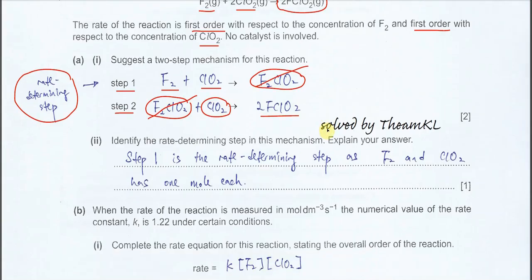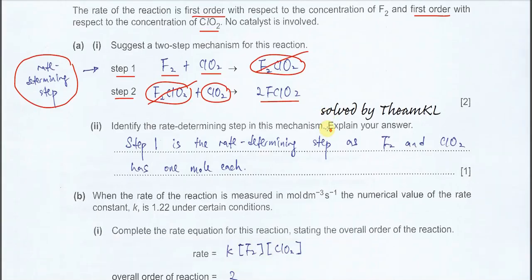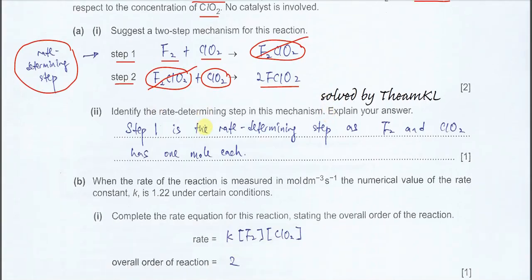For Part A2, identify the rate determining step in this mechanism and explain your answer. As established, Step 1 is the rate determining step, because fluorine and chlorine dioxide each appear with one mole, making each first order.